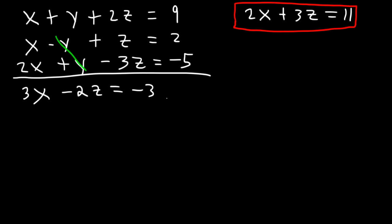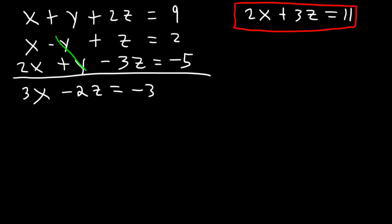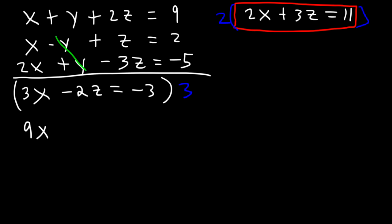So now let's combine this equation with the previous one and cancel the z variables. The least common multiple between 2 and 3 is 6. So let's multiply 3x minus 2z equals negative 3 by 3. 3x times 3 is 9x, negative 2z times 3 is negative 6z, and negative 3 times 3 is negative 9.